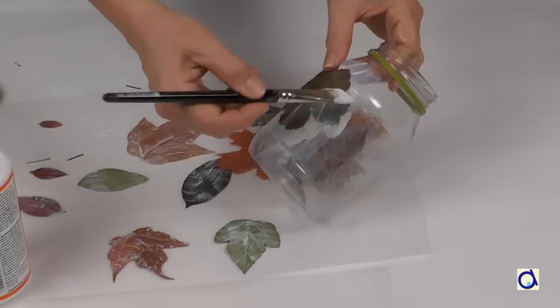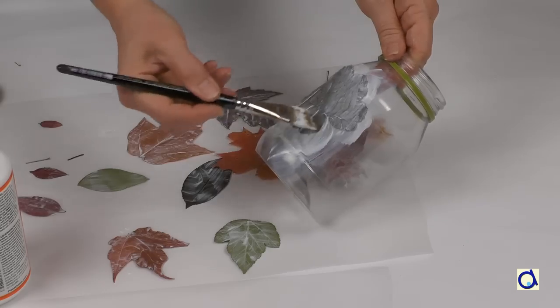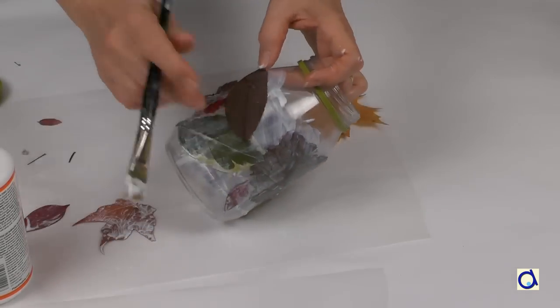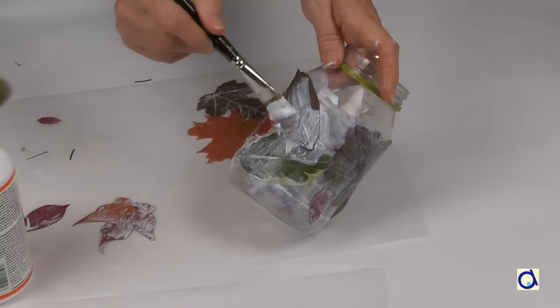Start to glue the leaves all around the container and brush them well with mod podge. When you are satisfied, leave the container covered with leaves to dry completely.